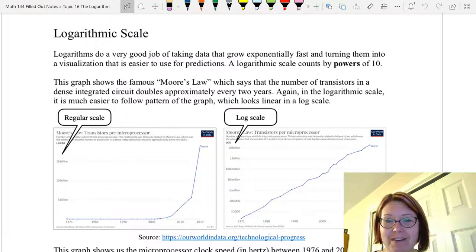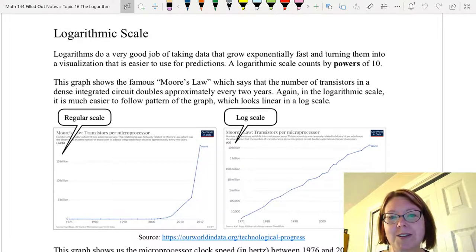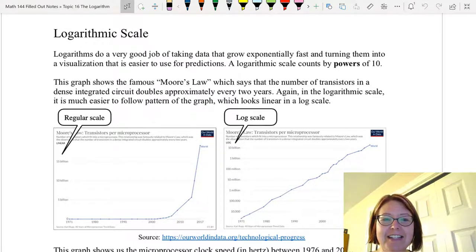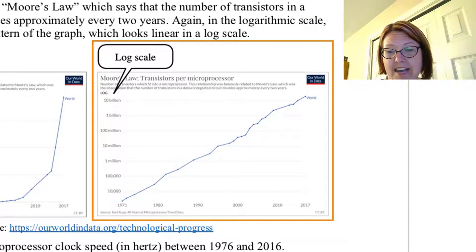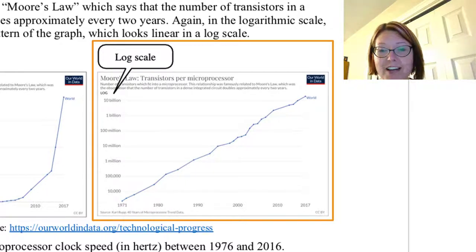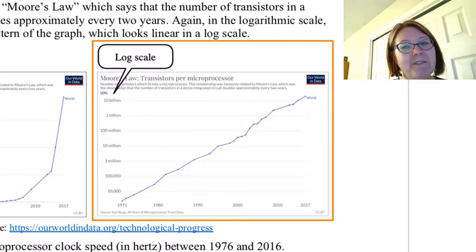One of the famous examples of this logarithmic scale is what we call Moore's Law, which says that the number of transistors in a dense integrated circuit doubles approximately every two years. If you've ever seen Moore's law, you've probably seen the graph on the right, which on the x-axis shows us the time and years from 1971 to today, and on the y-axis shows us the number of transistors in a dense integrated circuit. It goes from 10,000 to 100,000 to a million, 10 million, 100 million, 1 billion, and 10 billion. And those are the equally spaced lines. On a log scale, Moore's law looks delightfully linear, and we can see a very nice pattern of linear increase.